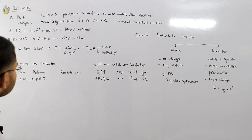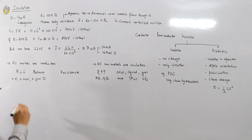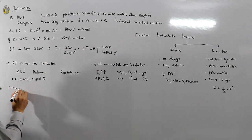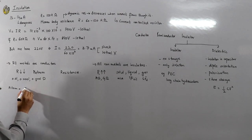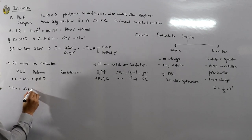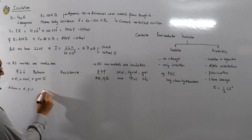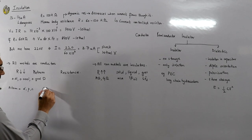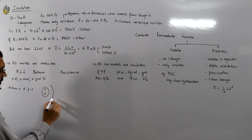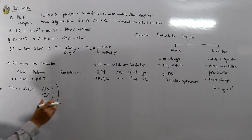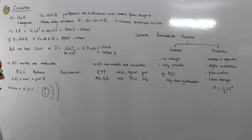An atom consists of three ingredients: electrons, protons, and neutrons. The proton and the neutron are in the nucleus of the atom, and the electrons revolve around the nucleus in certain fixed paths called the energy levels, or shells, or orbits.